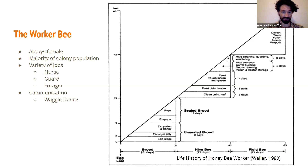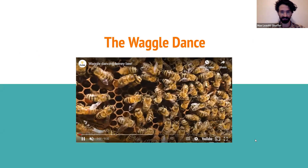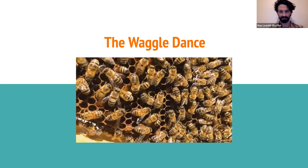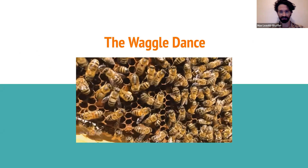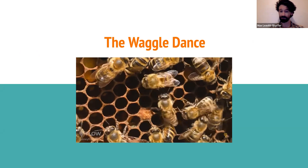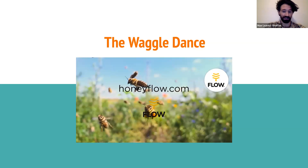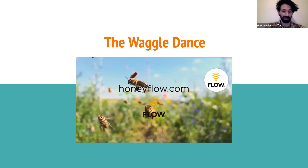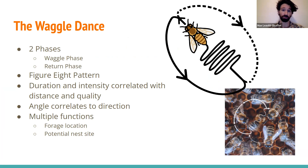Next we have a short video of the waggle dance. You can see the bees are following each other and moving in a figure-eight pattern, and you can see the waggle — they just keep going back and forth. This bee is sending a lot of messages to the other workers without speaking. The waggle dance consists of two phases: the waggle phase, when they move their abdomens back and forth, and then the return phase. The forager moves in a straight line while waggling her abdomen, turns to the right and returns to the starting position, then turns to the left and repeats the cycle.